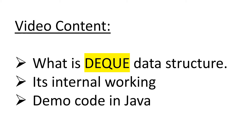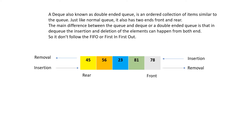So what is Deque? A Deque, also known as a double-ended queue, is an ordered collection of items similar to the queue. Just like a normal queue it also has two ends — front and rear. The main difference is that in Deque the insertion and deletion of elements can happen from both ends, so it does not follow the FIFO principle.